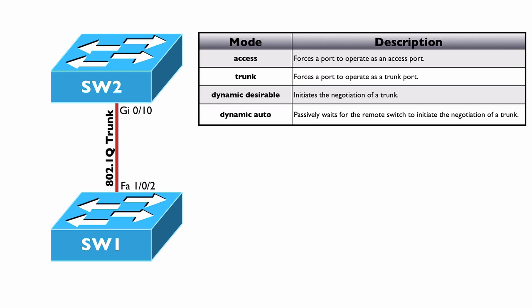The other option is dynamic auto. Dynamic auto says I'm willing to respond to DTP frames if somebody sends me a frame saying let's negotiate a trunk — I'm good with that, let's form a trunk. But I will never initiate that negotiation. Dynamic auto will never originate this DTP conversation. Now that we understand these different modes of operation, let's consider some of the different combinations and permutations — what if one side is set to one mode and the other side is set to another mode?